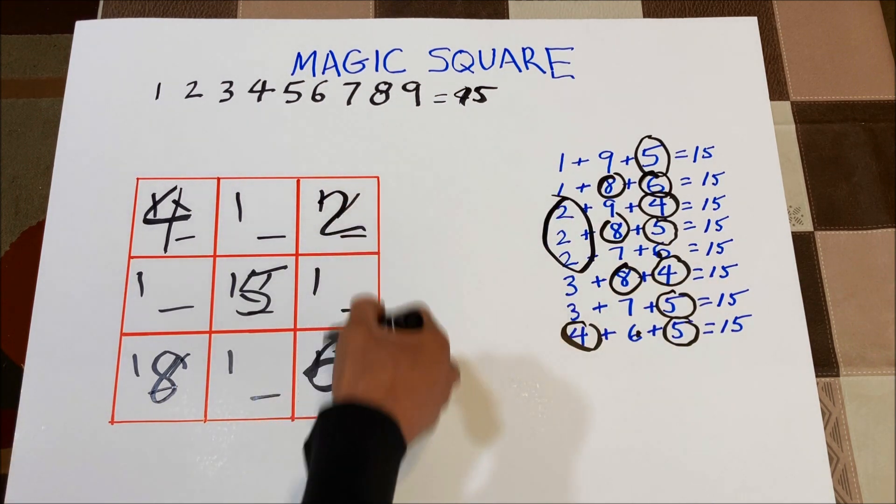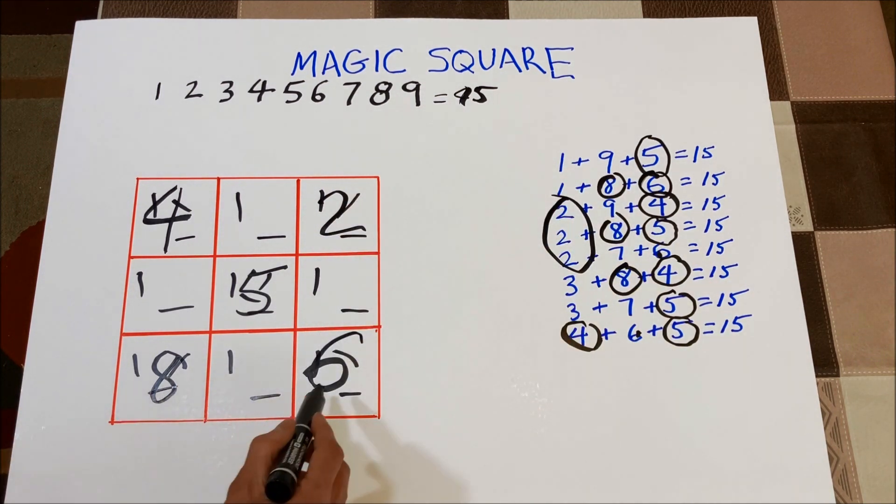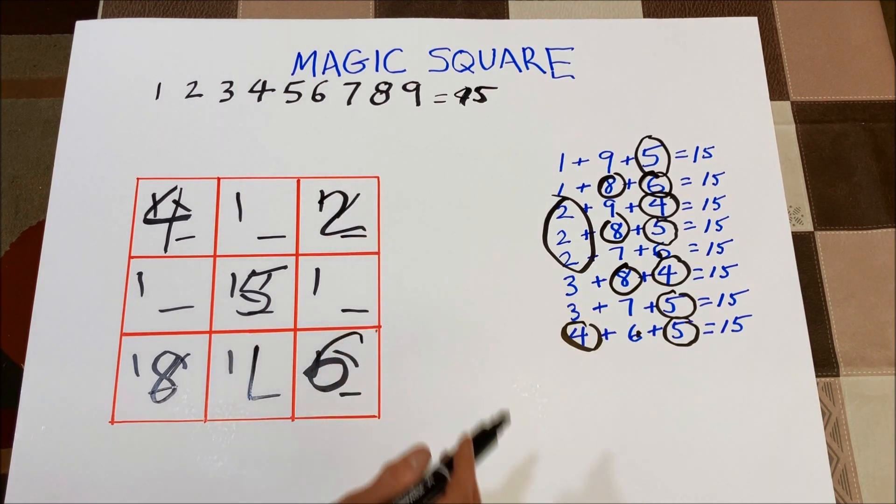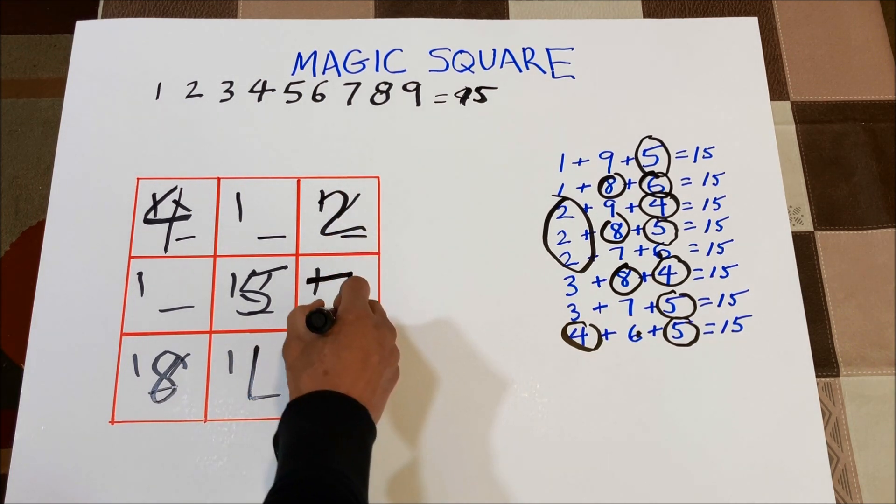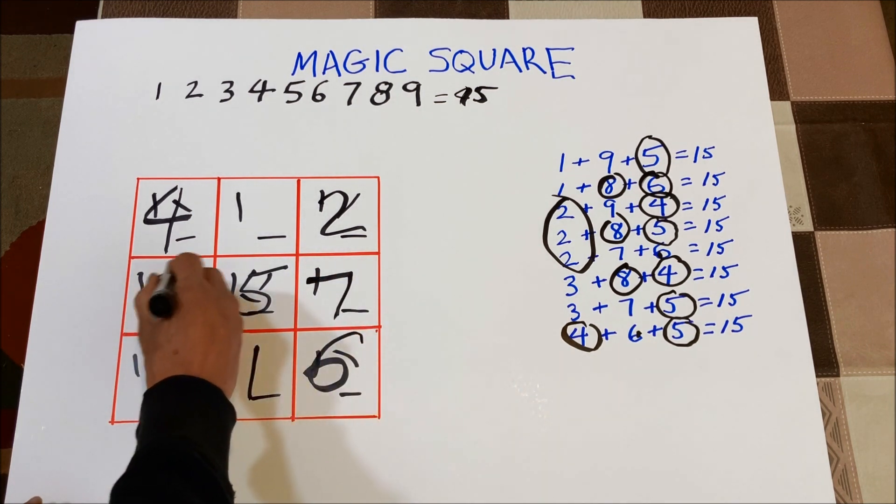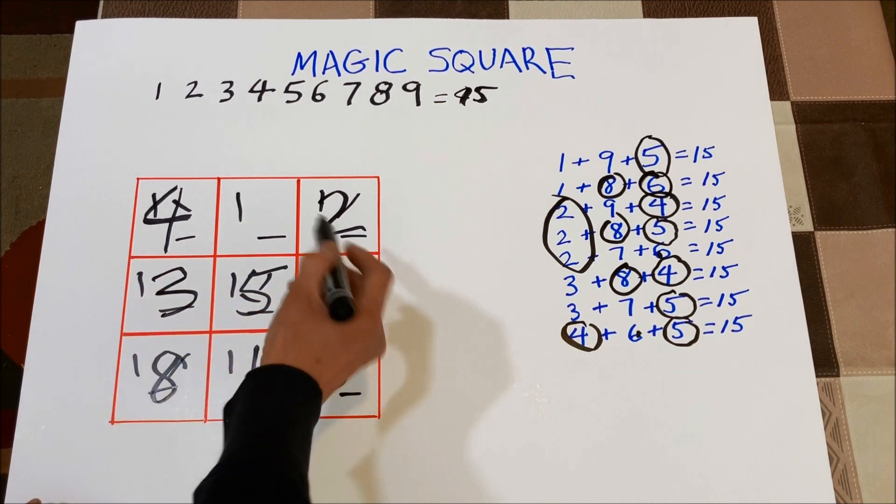The rest is easy. Just solve the equation. Eight plus six, fourteen, one goes here. Two plus six is eight, seven goes here. Seven plus five is twelve, so three goes here. And the number nine.